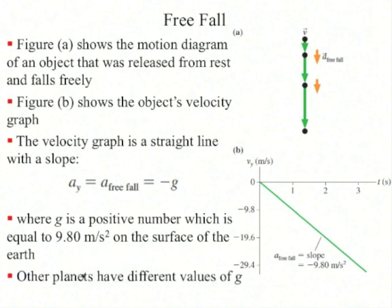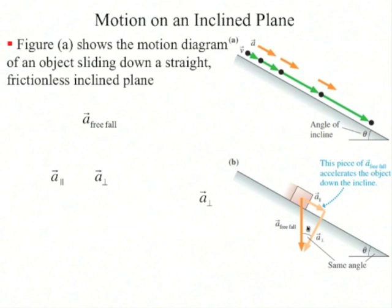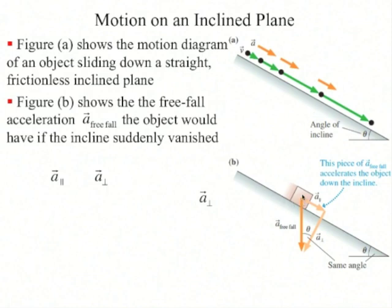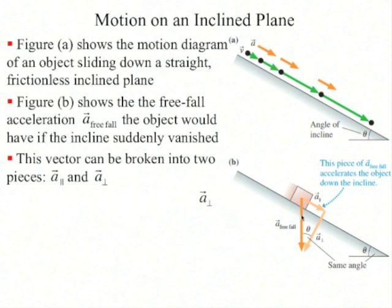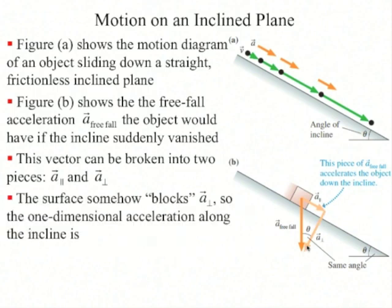g is not a universal constant — on another planet you might have a different value. But here on Earth it's 9.80 meters per second squared. Now consider an object sliding down a straight frictionless plane. Below it is a diagram showing the freefall acceleration the object would have if the incline suddenly vanished. You can divide the acceleration vector into two perpendicular components: a parallel and a perpendicular to the surface. The surface blocks the perpendicular component, so the one-dimensional acceleration along the incline is just a parallel, which works out to g times sine theta, where theta is the angle of the incline.